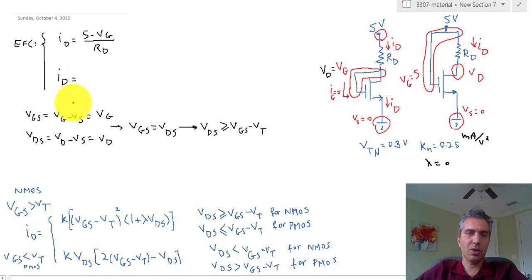So when I pick the equation, I'm actually certain that the equation I have to pick is the saturation equation. This would be KN 0.25 times VGS, which in our case is just VG minus VT, which is 0.8, to the power of 2. I have two equations and two unknowns. Assuming RD is given, if you have value of RD, then you can calculate ID and VG.